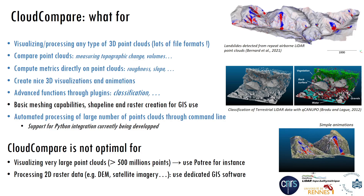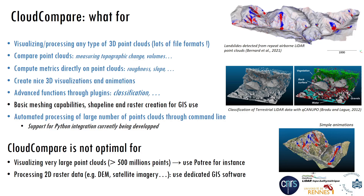Cloud Compare is really dedicated to point clouds. So if you have mesh data, it has basic meshing capabilities, but it is not really suitable for that. It can also create shapefiles and rasters for GIS use, and it has automated processing of a large number of point clouds through command line. There is currently also development of support for Python integration.